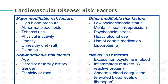Novel risk factors include excess homocysteine in blood — homocysteine is an amino acid produced when there is a breakdown of protein, meaning excessive intake of protein. Inflammatory markers such as C-reactive protein, produced in the body when there is an inflammation due to bacterial infection. And lastly, abnormal blood coagulation or clotting such as elevated blood levels of fibrinogen.